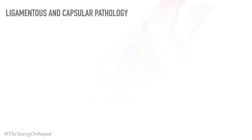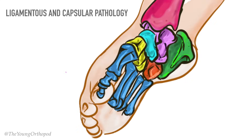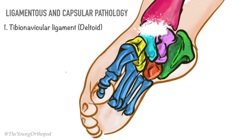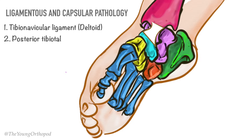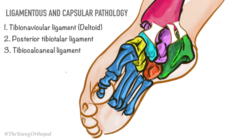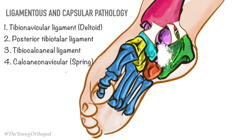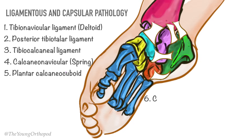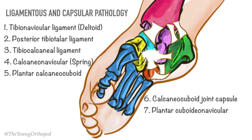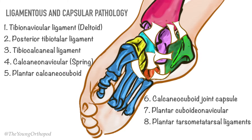Thickening and contracture of the ligaments as well as capsules have been reported. These include the tibionavicular ligament, the posterior tibiotalar ligament, the tibiocalcaneal ligament, the calcaneonavicular ligament, the plantar calcaneocuboid ligament, the calcaneocuboid joint capsule, the plantar cuboidonavicular ligament, the plantar tarsometatarsal ligament, and the plantar cuneonavicular ligament.